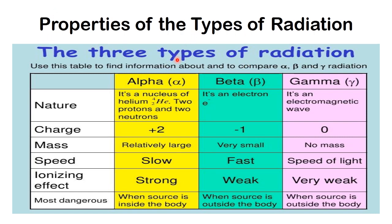Now looking at the three types of radiation and their properties: we have alpha particle, beta particle, and gamma, which is energy. Starting with their nature — an alpha particle is a nucleus of helium, made up of two protons and two neutrons. A beta particle is an electron. Gamma is an electromagnetic wave; it is not a particle, it is energy.